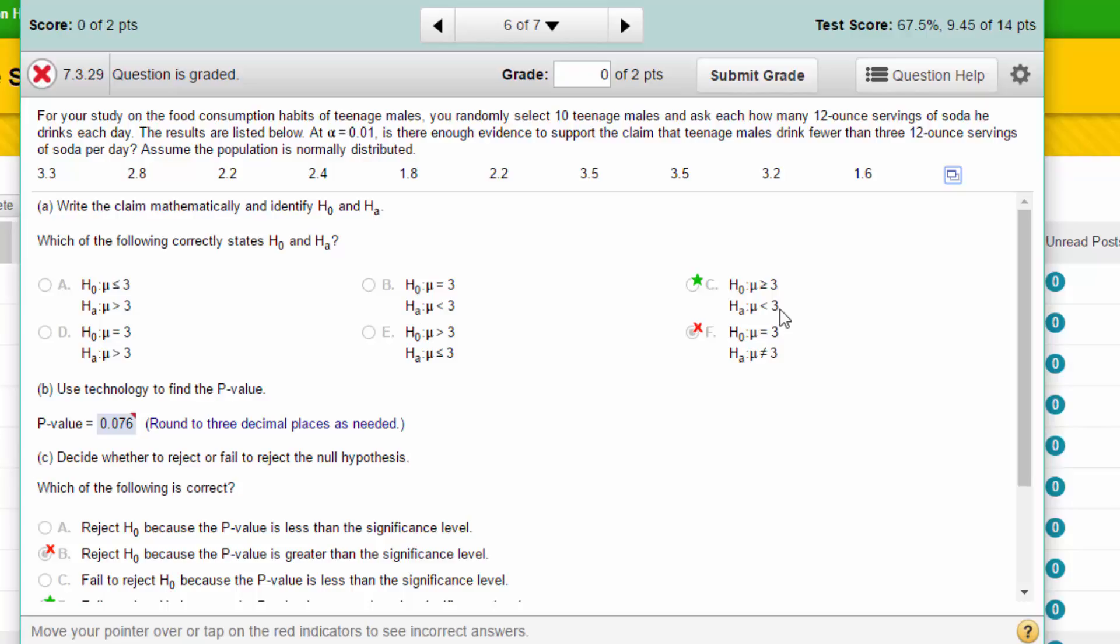The null has to be the complement, and that is greater than or equal to three. It's everything except less than three. So that is our null and that is our alternative.